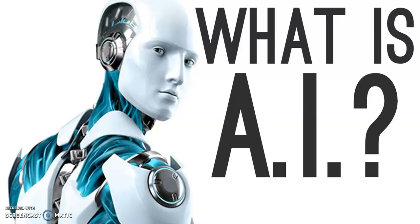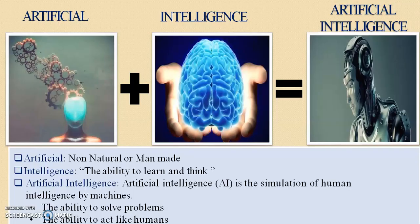The first question that arises in our mind is: what is artificial intelligence, or what do you mean by AI? Artificial intelligence is made up of two words — artificial and intelligence. Artificial means non-natural or man-made things, and intelligence is the ability to learn and think. So, artificial intelligence is the simulation of human intelligence by machines.